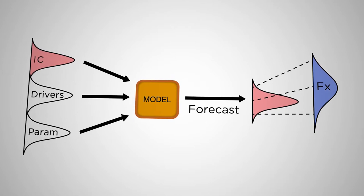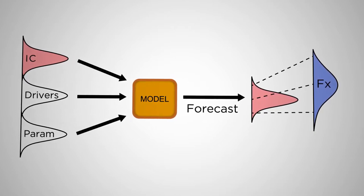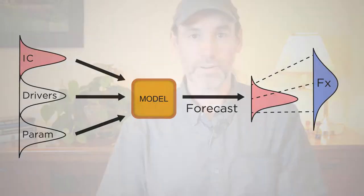Once that is done, you then need to do the analysis step. For the analysis step, in the general sense, we can do this using any form of Bayesian inference, where we are using the model forecast as our prior and then updating that using the likelihood to add new information.